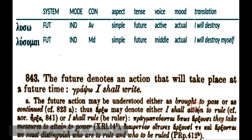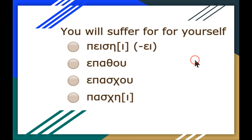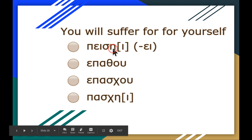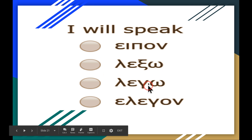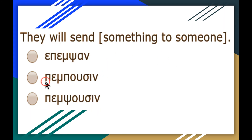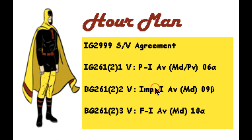The future is simply a simple future active: 'I will destroy.' The middle: 'I will destroy myself' — it only occurs in the middle. 'You will suffer for yourself' is middle, so we look for sigma. For paskō, the future is irregular. 'I will speak' — legō or lexō: leg- with sigma becomes lex-. 'They will send' is active: pempousin is present, but you add a sigma for the future: pempsousin. That covers all of it — it will encompass about 10 percent of the exam.